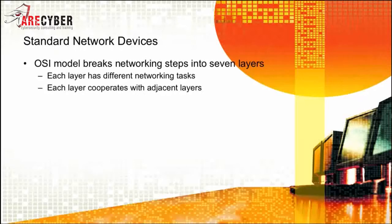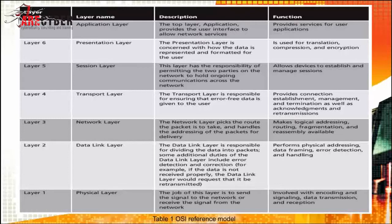The OSI model breaks networking into seven basic layers. Each layer has a different networking task, and each layer can only speak to or interact with its adjacent layers — the layer above or the layer below. The seven layers from one to seven are the physical layer, the data link layer, the network layer, the transport layer, the session layer, the presentation layer, and the application layer. To successfully navigate the Security Plus examination, you must be familiar with all seven of these layers, their names, and their functions.